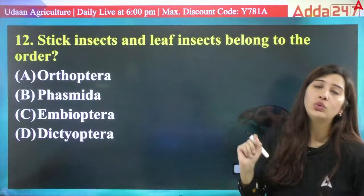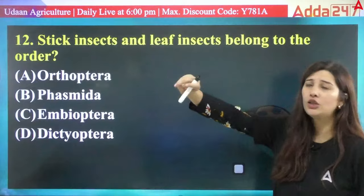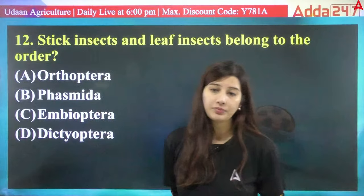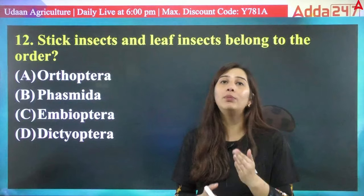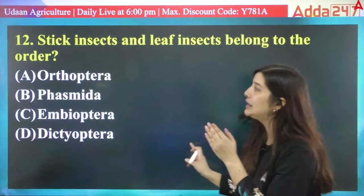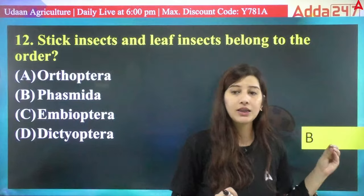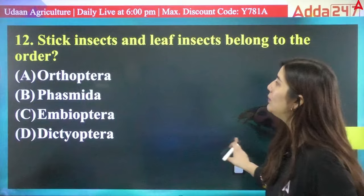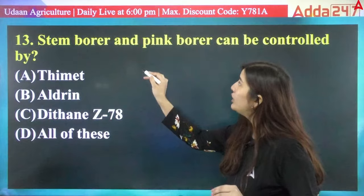Stick insect and leaf insect belong to which order? Options: Orthoptera, Phasmida, Ambioptera, or Dictyoptera. Though we focus on agriculture-important orders, this question has appeared in exams. Add this to your notes: stick insects and leaf insects belong to the order Phasmida. The answer is B — Phasmida.